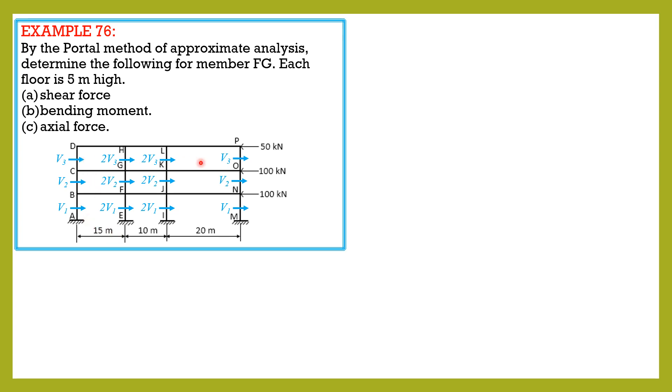So for the upper level, summation of forces horizontal, so 6v3 equals 50. For level 2, so that we can solve for the shear in FG right away, 50 plus 6v2.